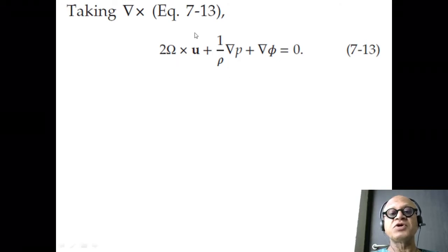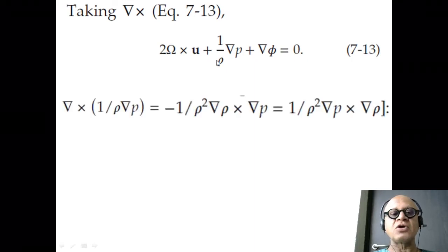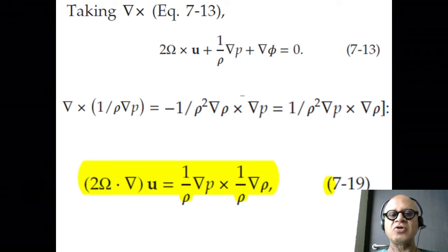We had started this equation in 7-13 where we had taken steady, so the UDT was gone, inviscid, so F was gone, and we had this remaining balance. We took a curl of that and ended up with the baroclinic vector, grad rho cross grad P is our baroclinicity.